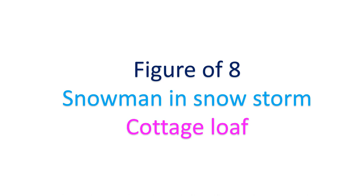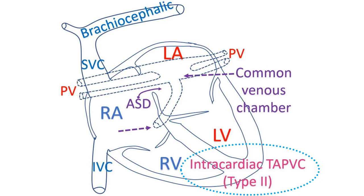Snowstorm refers to the pulmonary plethora along with the supracardiac shadow. In the intracardiac variety of TAPVC, all 4 pulmonary veins drain into a common venous chamber which drains into the coronary sinus. The common venous chamber can be seen behind the left atrium on echocardiography. Opening of pulmonary veins into the left atrium will not be seen; drainage can be traced to the coronary sinus instead.